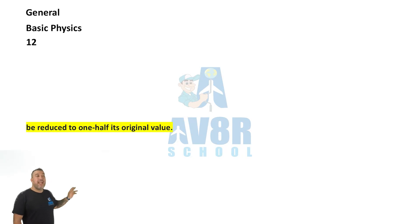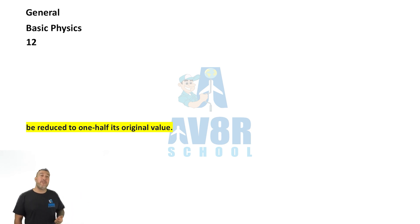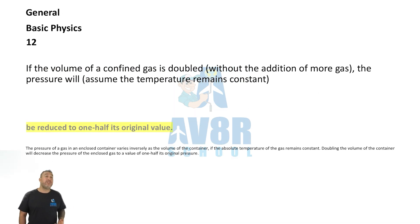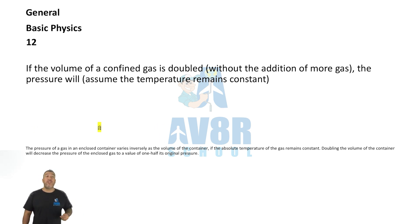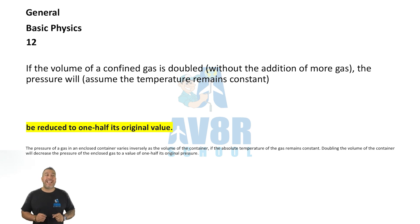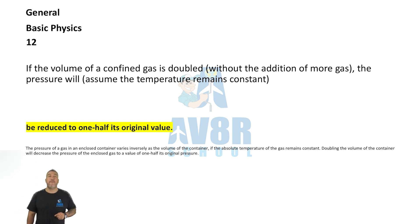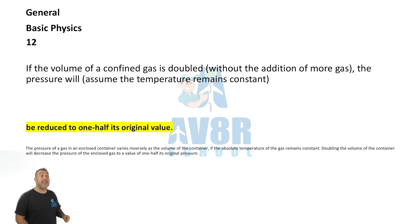Number 12, basic physics. If the volume of a confined gas is doubled without adding more gas, the pressure will be reduced to one-half of its original value. That's considering without adding more gas and assuming the temperature stays constant.